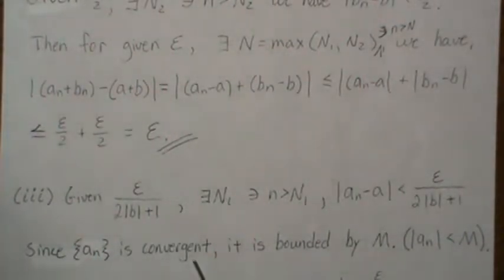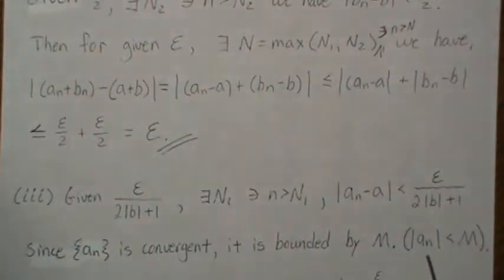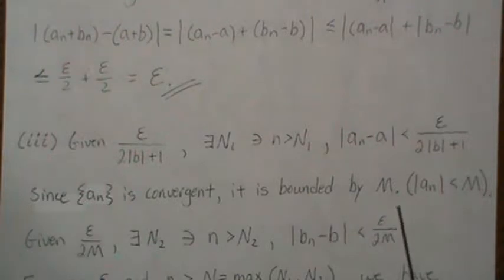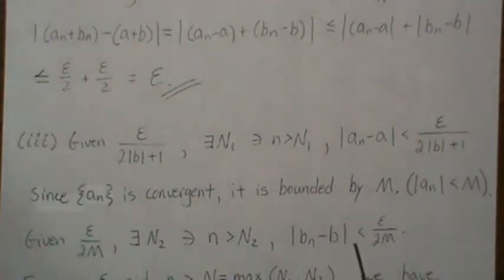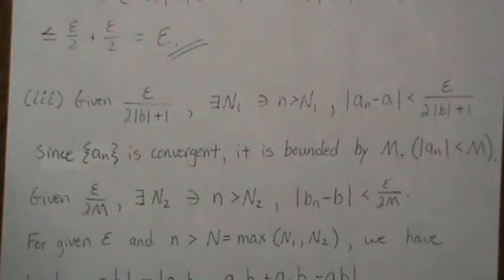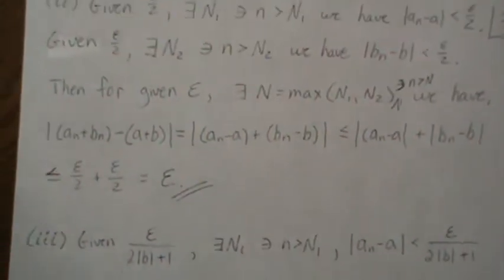Since An is a convergent sequence, it is bounded by some number M, meaning |An| is strictly less than M for all n. Given epsilon over 2M — and this M is really this M — there exists an N2 such that for n greater than N2, |Bn − B| is less than epsilon over 2M, because Bn is a convergent sequence. This difference can get really, really small no matter what this number is. So for a given epsilon and n greater than N, which is the maximum of N1 and N2, we have the following.